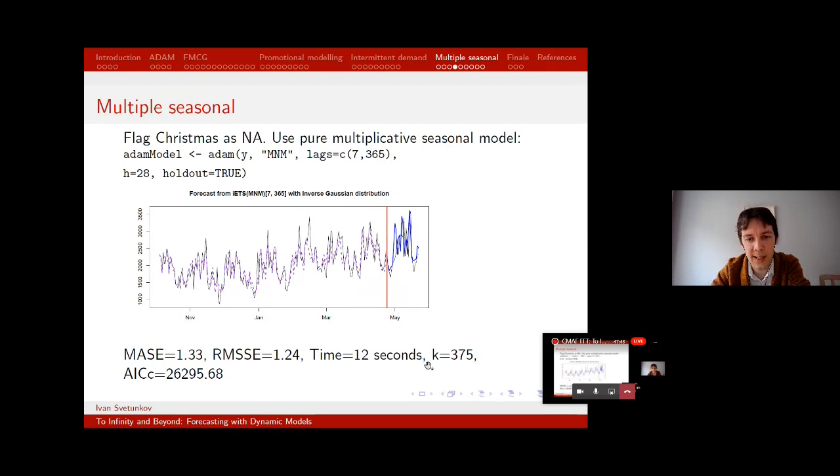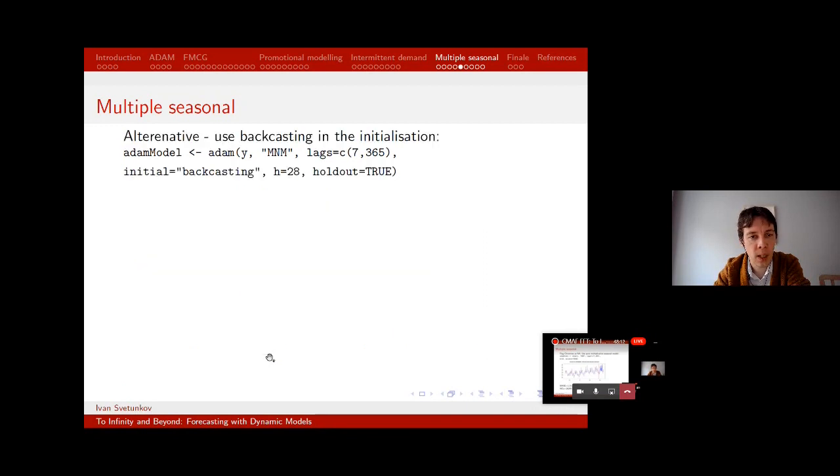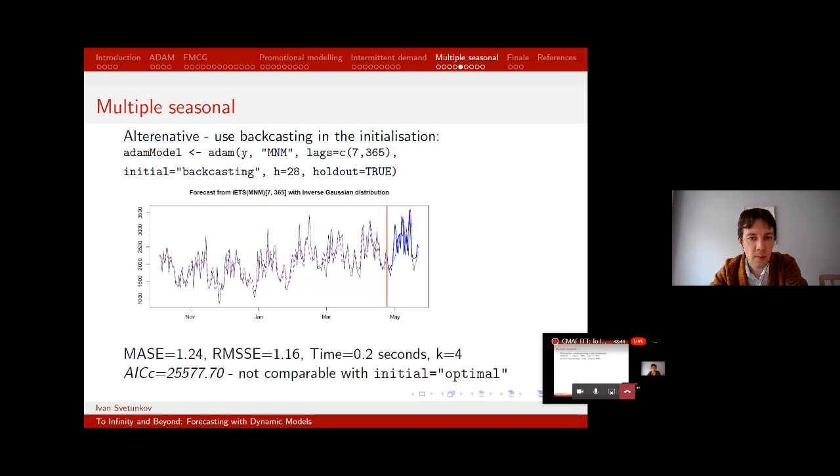Alternative would be to use a different initialization. So instead of optimizing all those seasonals, 365 seasonals and then plus seven seasonals and so on and so forth, we could use backcasting. The idea is that you fit the model, you go through the first observation till the very last in the sample, then you revert the model and move backwards, and then you obtain the initials by doing this backward movement. And that's what we have. Good news, this takes only 0.2 seconds, which is much better. AICC here is not comparable with the previous because we have a different number of parameters to different initialization and so on. And in this case, we only have four parameters, which is nice. Error measures, I think they're both slightly smaller than in the previous case.